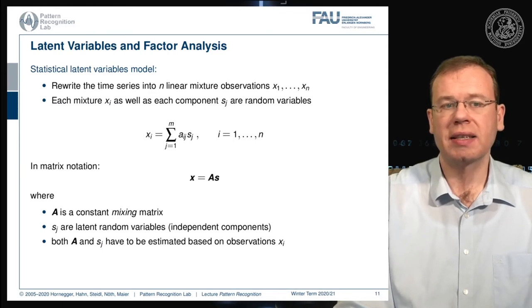And now A is a constant mixing matrix. So this doesn't change. Then we have the latent random variables SJ. These are the independent components. And both A and SJ have to be estimated based on the observations XI. Now this is actually a pretty hard problem because we somehow need to factorize our signals.